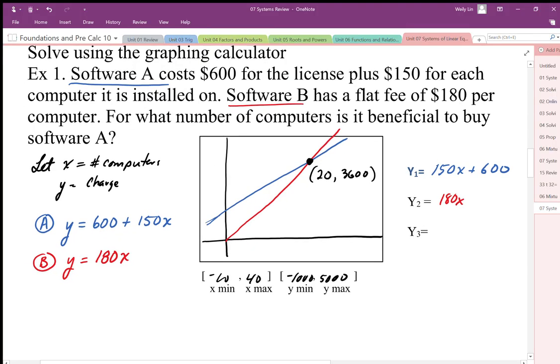For greater than 20 computers, Software A is a better deal. We can find the solution here, and then we still have to analyze the problem to determine when Software A is better. Software A is better after 20 computers because it's cheaper per computer.